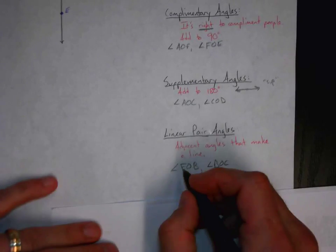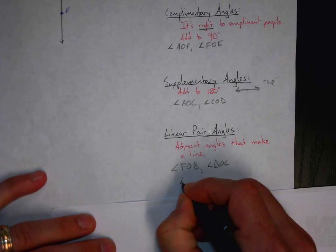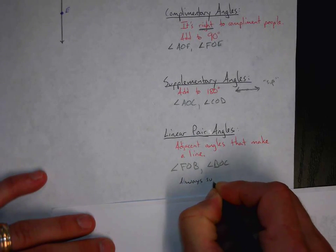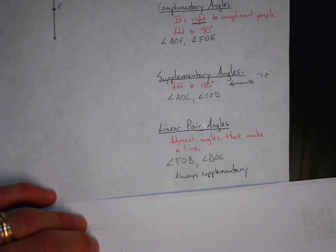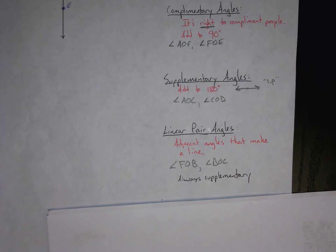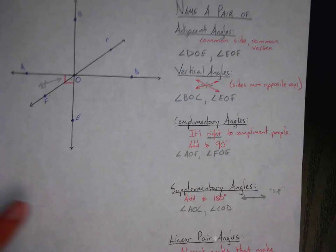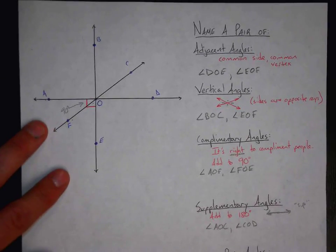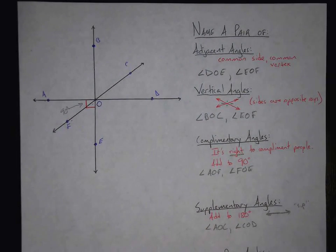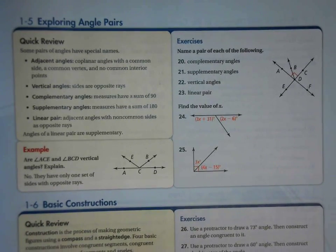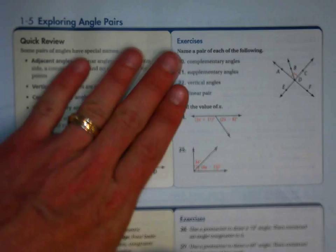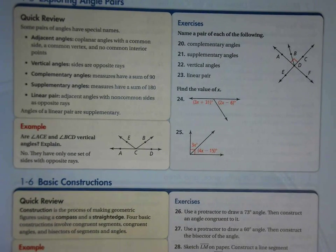So linear pair angles are always supplementary — more vocab! So you can use all sorts of other vocab for linear pair angles. So we have the notes for all of the angle pairs. You have to know this vocabulary so that we can communicate effectively and argue stuff later. So with all that knowledge, what we can do is go through these exercises somewhat quickly and we'll be ready to go.